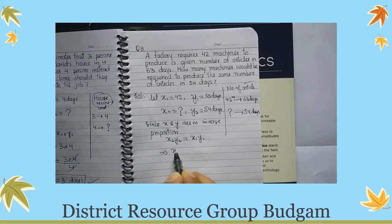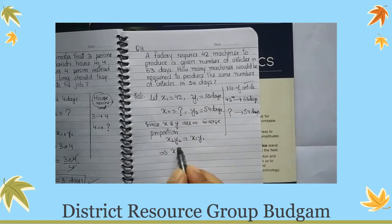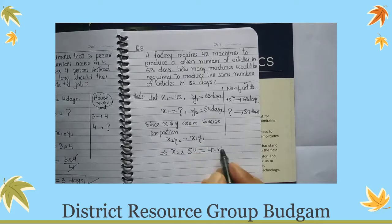This gives x2 into y2, what is y2? 54, equals to x1, what is x1? 42, into y1, y1 ya hum diya hai 63.